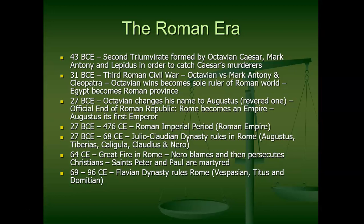Octavian runs the country without any official title at first, with the Senate passing only laws he wants. Then about four years in, he changes his name to Augustus — meaning essentially 'worship me' — and that moment officially ends the Roman Republic. Rome becomes an empire because Augustus is given the title 'Imperator' — where we get the word emperor — and is made the first 'Princeps,' or first citizen of Rome. So the first emperor is not Julius Caesar, as many believe, but Octavian Caesar, or Augustus Caesar. The imperial period lasts about 500 more years, from about 27 BC to 476 AD, with an early and a late imperial period.